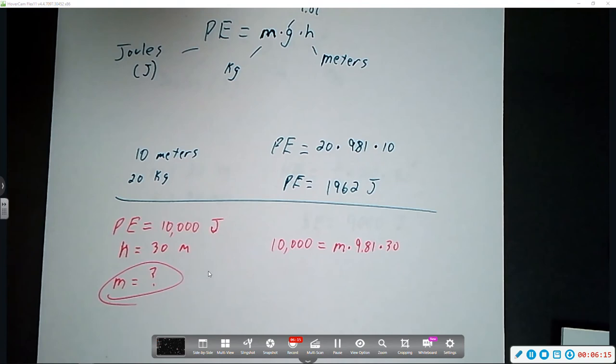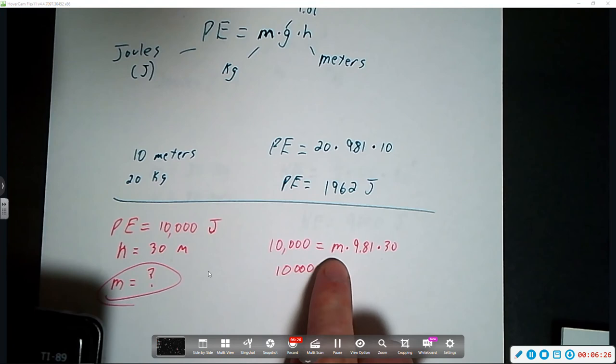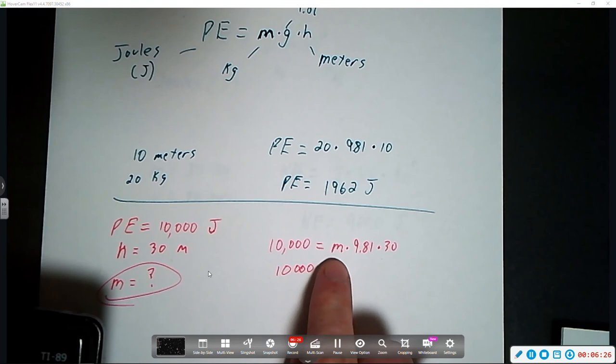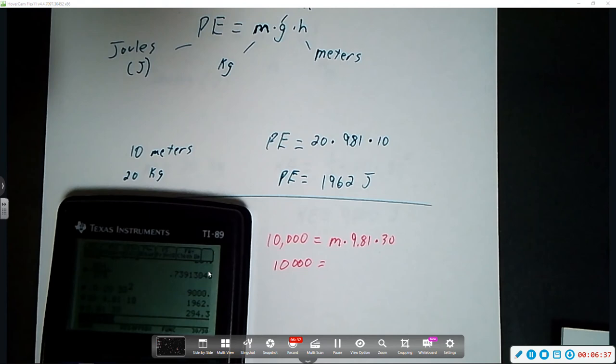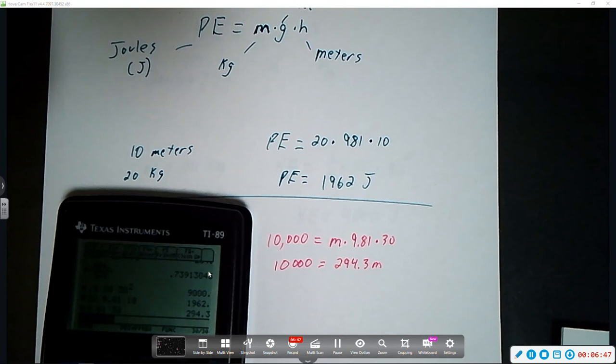Now, we can't just solve this in one step. This is going to be a two-step equation. So, you have your 10,000, because nothing happens on the left side of the equation yet, is equal to mass times 9.81 times 30. So, we're going to use order of operations, and we're going to do that multiplication. So, 9.81 times 30 gives us 294.3, and you still have the variable m there, because we haven't solved for that yet.